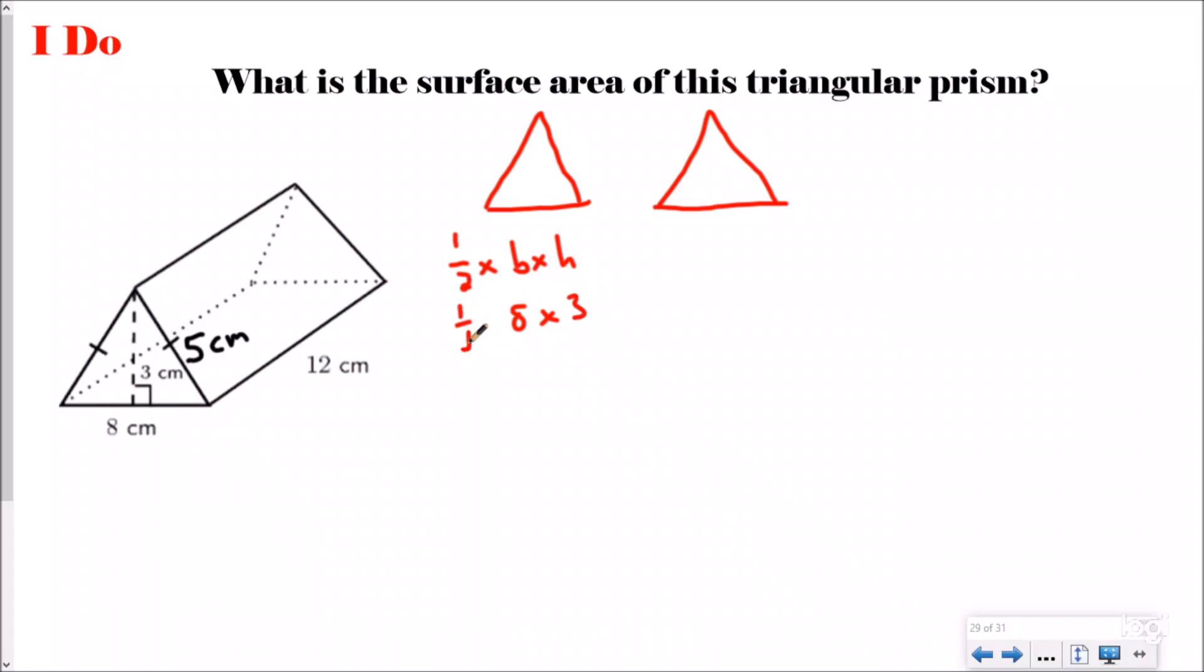When I do one half times 8 times 3, I'm going to make this 12 centimeters squared. That's the area of that side, which means my other triangle is also 12 centimeters squared.